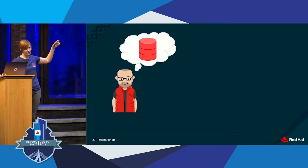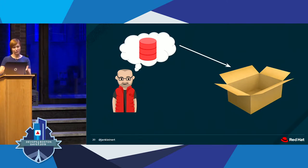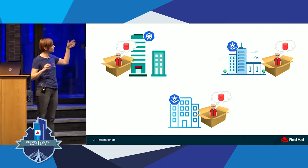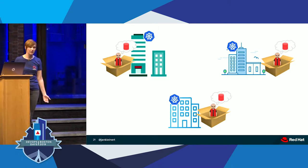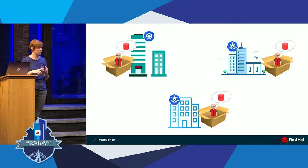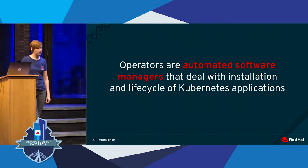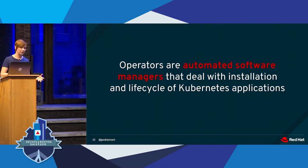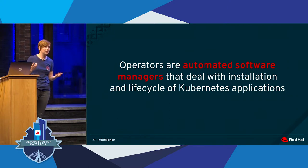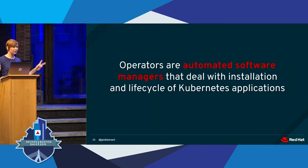What if we could take all of his operational knowledge and package it up—put it into code and put it in a box? You could take that packaged knowledge and install it on any Kubernetes cluster running in any enterprise on any cloud, and have that production-ready database—or whatever your stateful software is—run on any cluster, with that knowledge embedded of what to do when it needs to be installed, configured, backed up, and so on. That's what we're talking about when we talk about the operator pattern: automated software managers that handle the installation and lifecycle of Kubernetes applications.